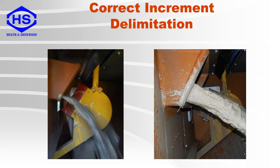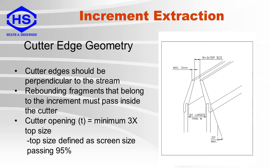These are examples of correct increment delimitation. You can see the cutter going through the stream — it is in good shape and there is no rejection of particles, and it is long enough to capture the complete flow. For good increment extraction, proper design of the cutter edge geometry is also required. Cutter edges should be perpendicular to the stream and have a maximum thickness of 3 mm. Rebounding fragments that belong to the increment must pass inside the cutter. The cutter opening should be at least 3 times the top size and a minimum of 10 mm. The blade should have an angle of no more than 20 degrees. The exit size of the cutter should be greater than its inlet size to avoid particle rejection.